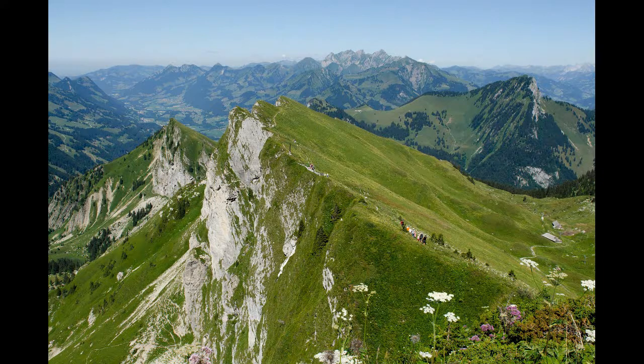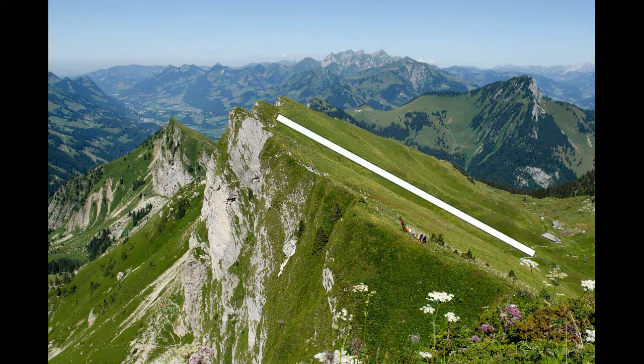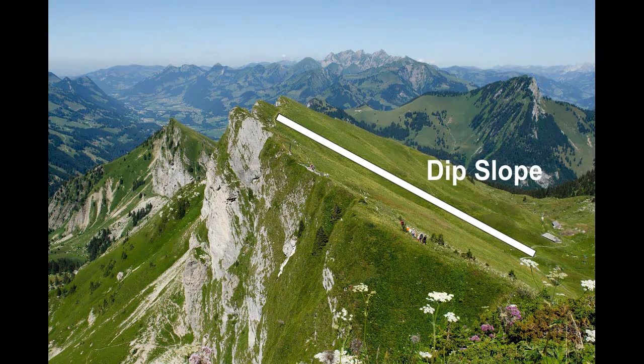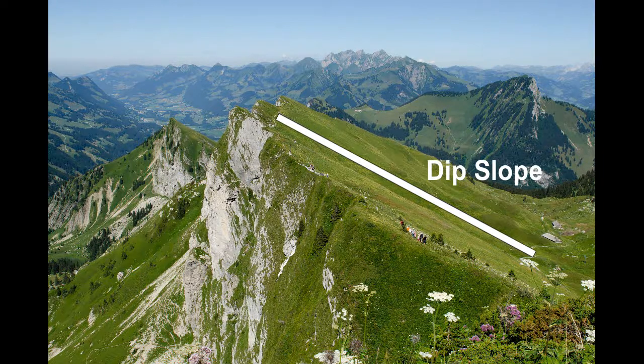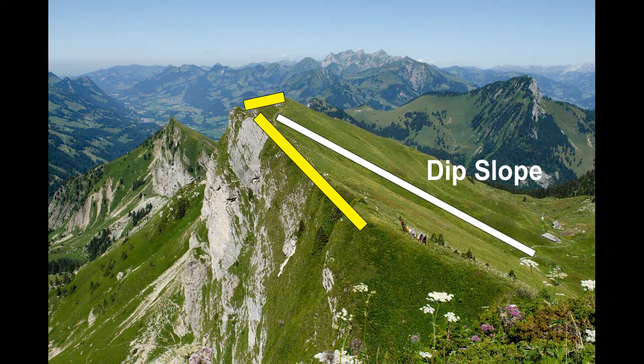Here is an example of a mountain showing a really good dip. That dip slope is running at a gentler angle, and then at the top we're going to have our strike running along the top of that ridge, meeting that dip slope at a perpendicular angle.